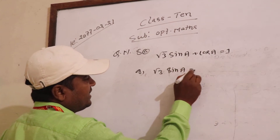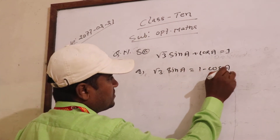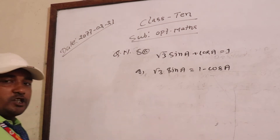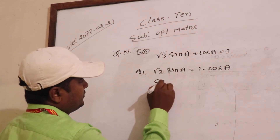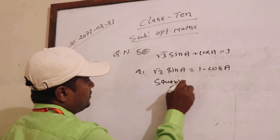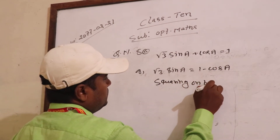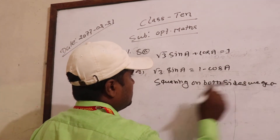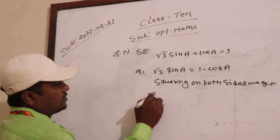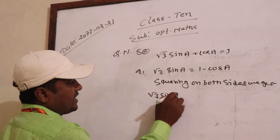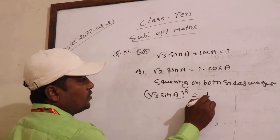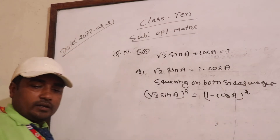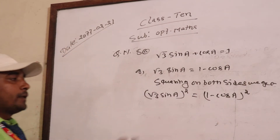Root 3 sin A equal to 1 minus x. Squaring both sides: root 3 sin A all squared, and 1 minus cos A of force. This time you can write 3.